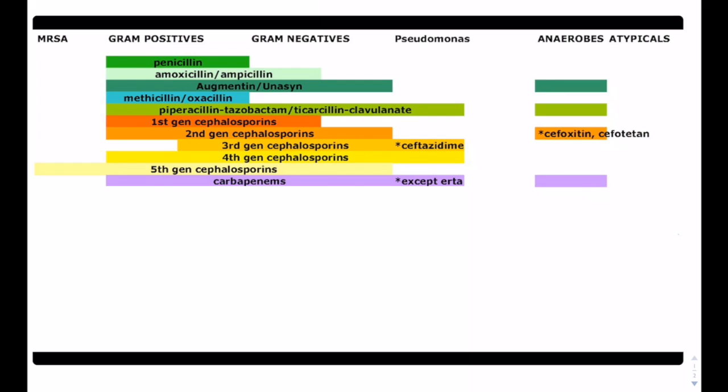Then we have the carbapenems. These are very, very broad spectrum. They cover basically everything except the atypicals and MRSA. Also, ertepenem will not cover pseudomonas.